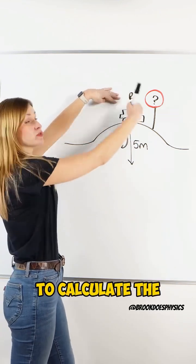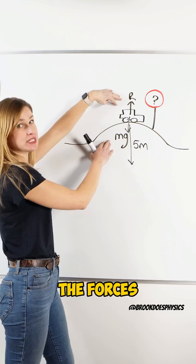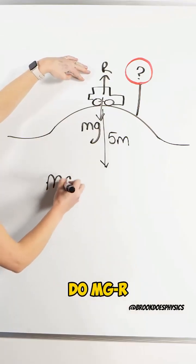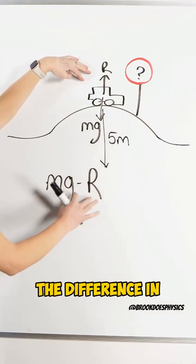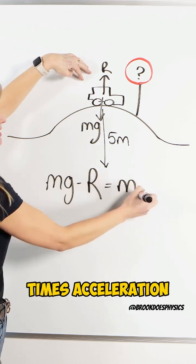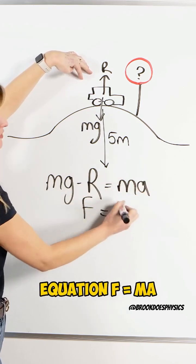So what we do here is to calculate the resultant force, the differences in the forces, is that we need to do mg minus r, the difference in those two forces, will equal mass times acceleration from the equation f equals ma.